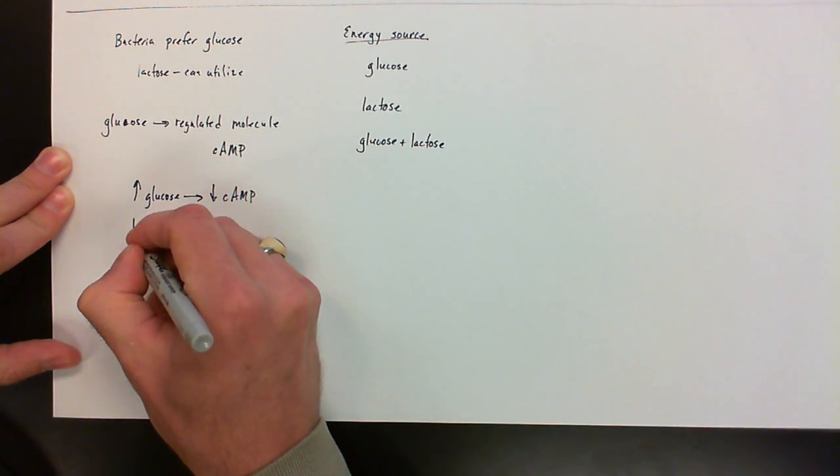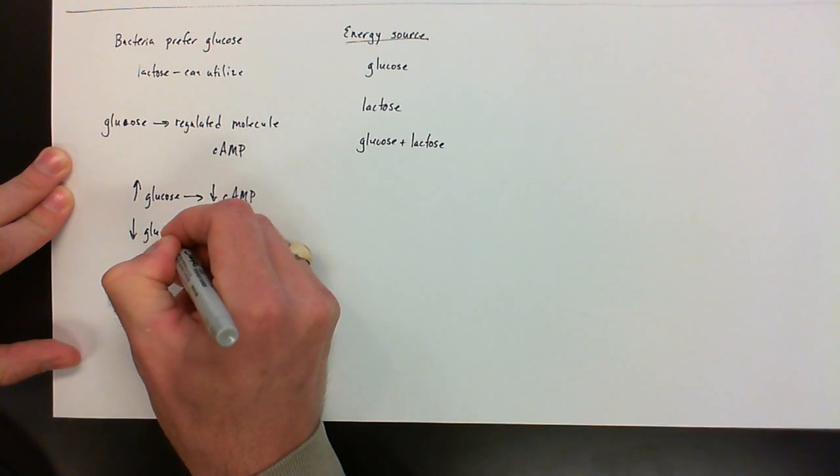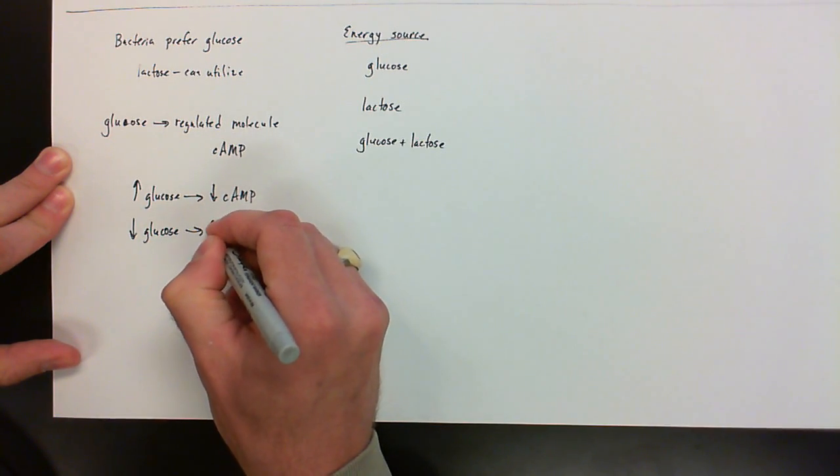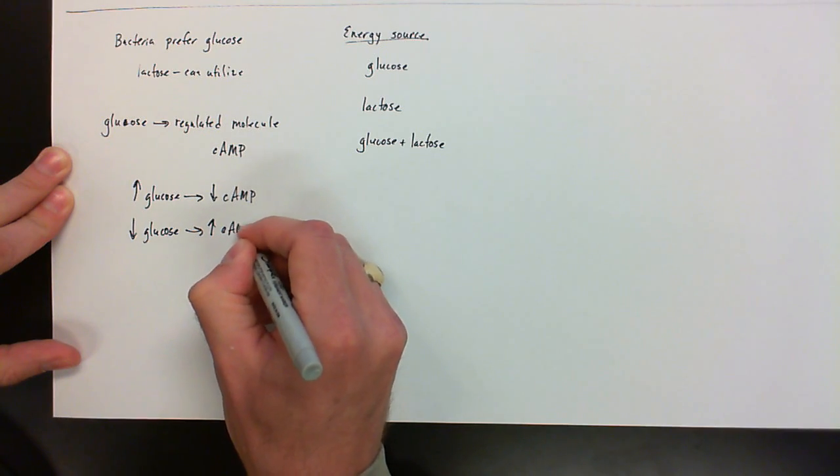When there is a low level of glucose, we are likewise going to see a high level of cyclic AMP.